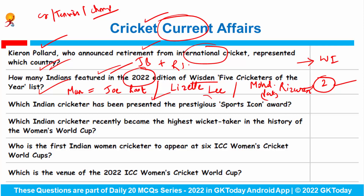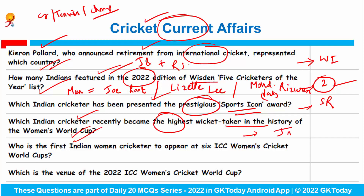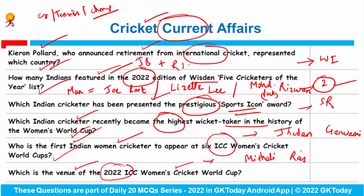The prestigious Sports Icon Award has been presented to Suresh Raina. Jhulan Goswami recently became the highest wicket taker in the history of the Women's World Cup. Mithali Raj is the first Indian woman cricketer to appear at six ICC Women's Cricket World Cups. The venue of the 2022 ICC Women's Cricket World Cup was New Zealand, and the winner was Australia, defeating England.